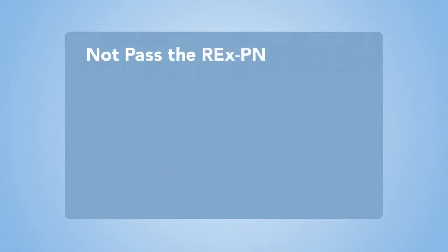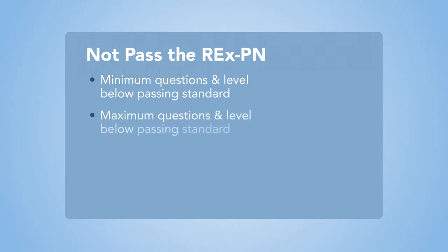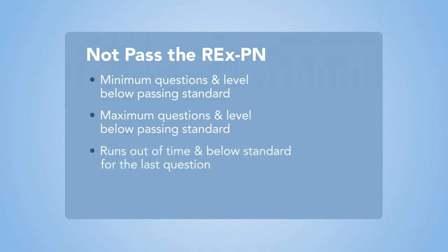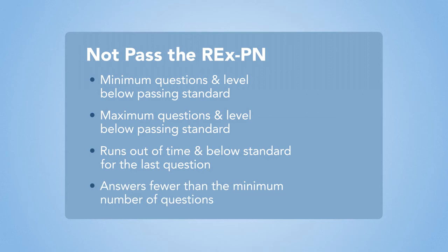A candidate will not pass the REXPN if they achieve a competence level significantly below the passing standard; answer the maximum number of questions and have a competence level below the passing standard; run out of time and have a competence level that falls below the passing standard at the last question answered; or answer fewer than the minimum number of questions during the time allowed.